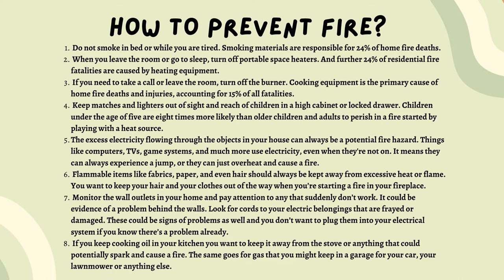Seven, monitor the wall outlets in your home and pay attention to any that suddenly don't work — it could be evidence of a problem behind the walls. Look for cords to your electric belongings that are frayed or damaged, as this could also signal problems. And lastly, if you keep cooking oil in your kitchen, keep it away from the stove or anything that could spark and cause a fire — the same goes for gas that you might keep in a garage for your car, lawnmower, or anything else.